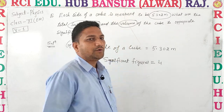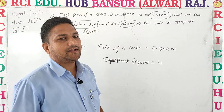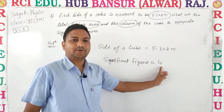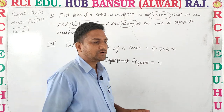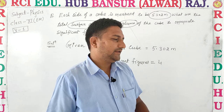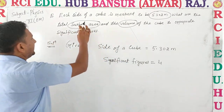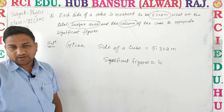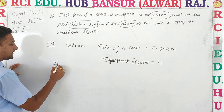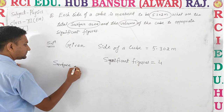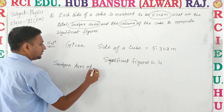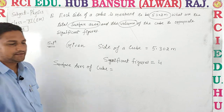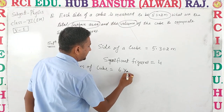इसका मतलब जो भी numerical में calculate करवा रहे हैं उसके significant figures भी 4 लेके आने हैं। अगर 4 नहीं आ रहे तो rounding off करना होगा। सबसे पहले surface area calculate करते हैं। Surface area of cube का formula है: 6 × side².